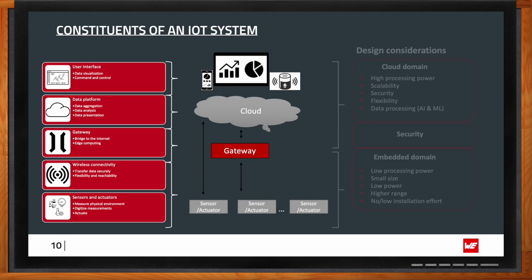As you can see in the slide, a typical IoT solution consists of sensors and actuators that interact with the physical world — for example a temperature sensor that reads a temperature value and converts it into a digital value for further processing. An actuator can be a switch that turns water on and off. Data generated from sensors needs to be transmitted to the cloud, which is where wireless connectivity comes in — the medium through which sensor data goes onto the cloud.